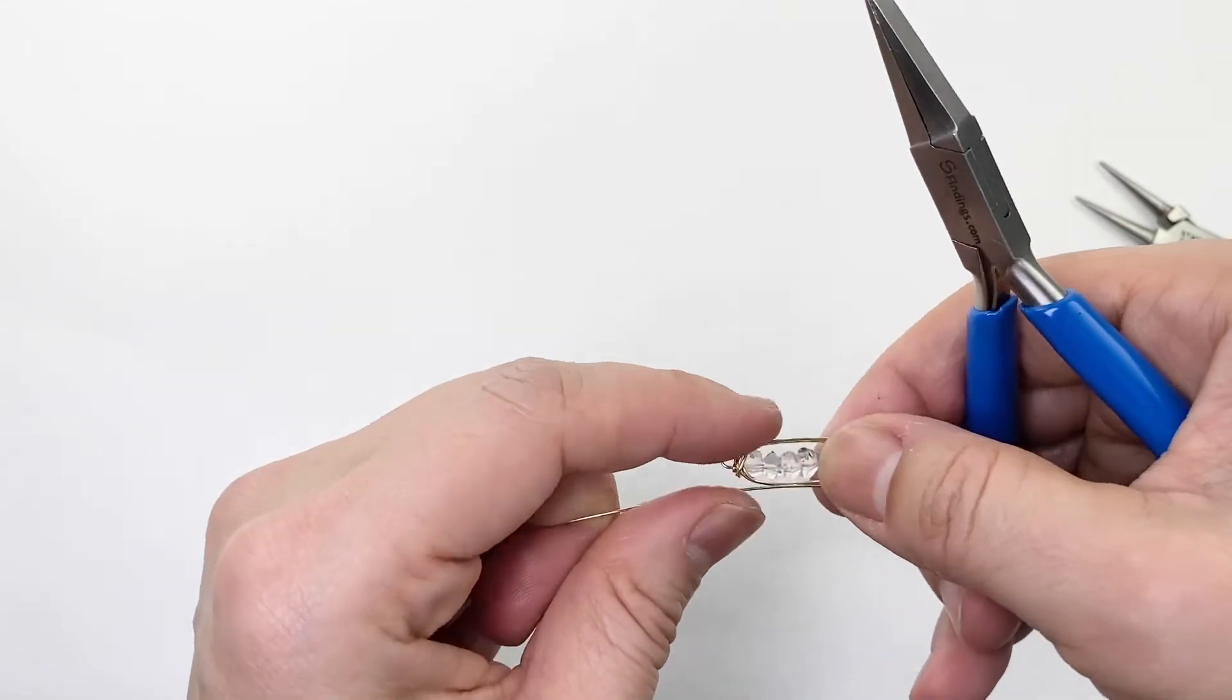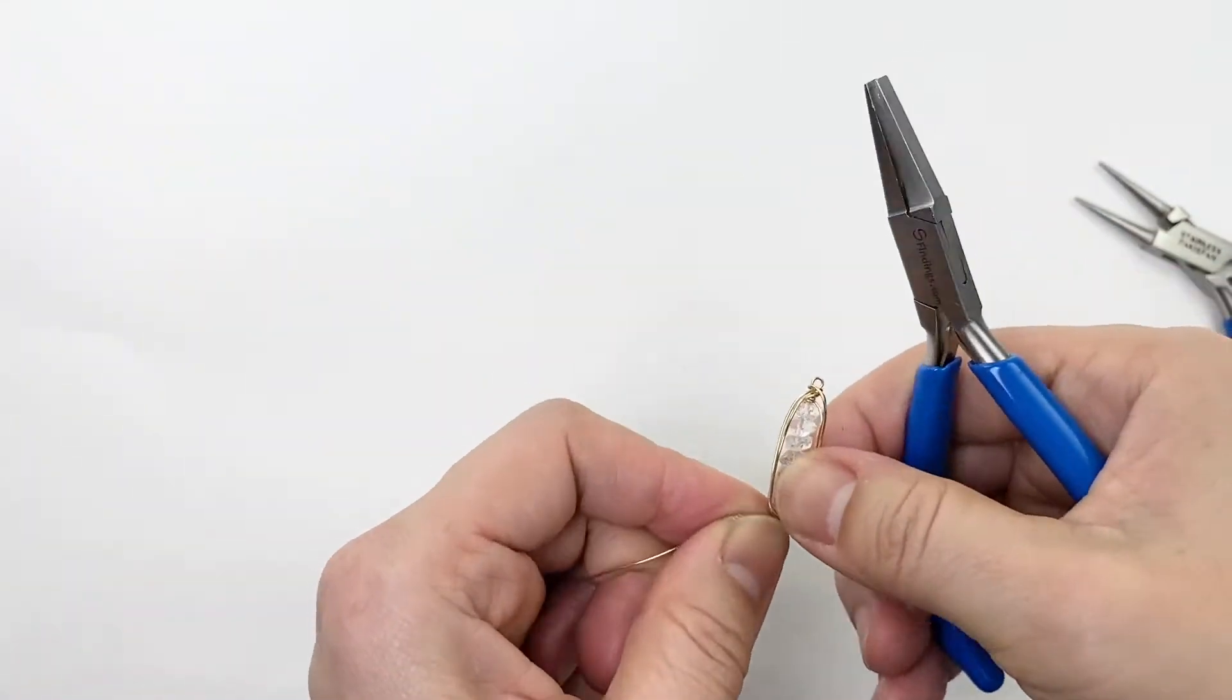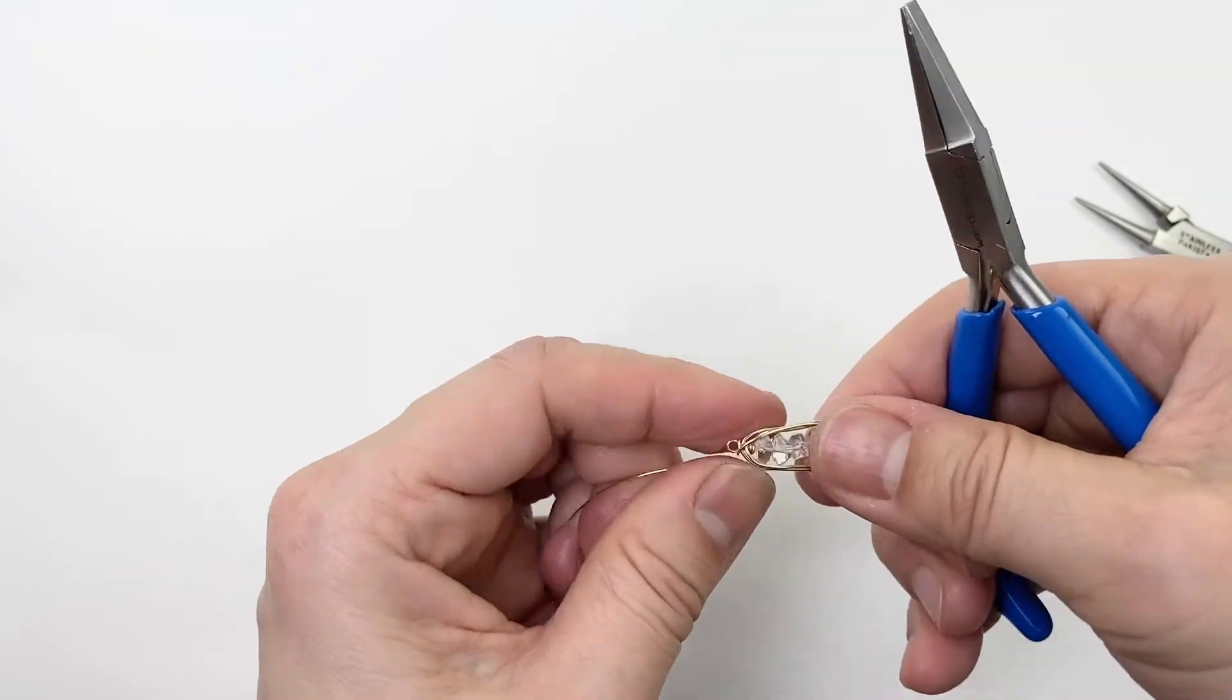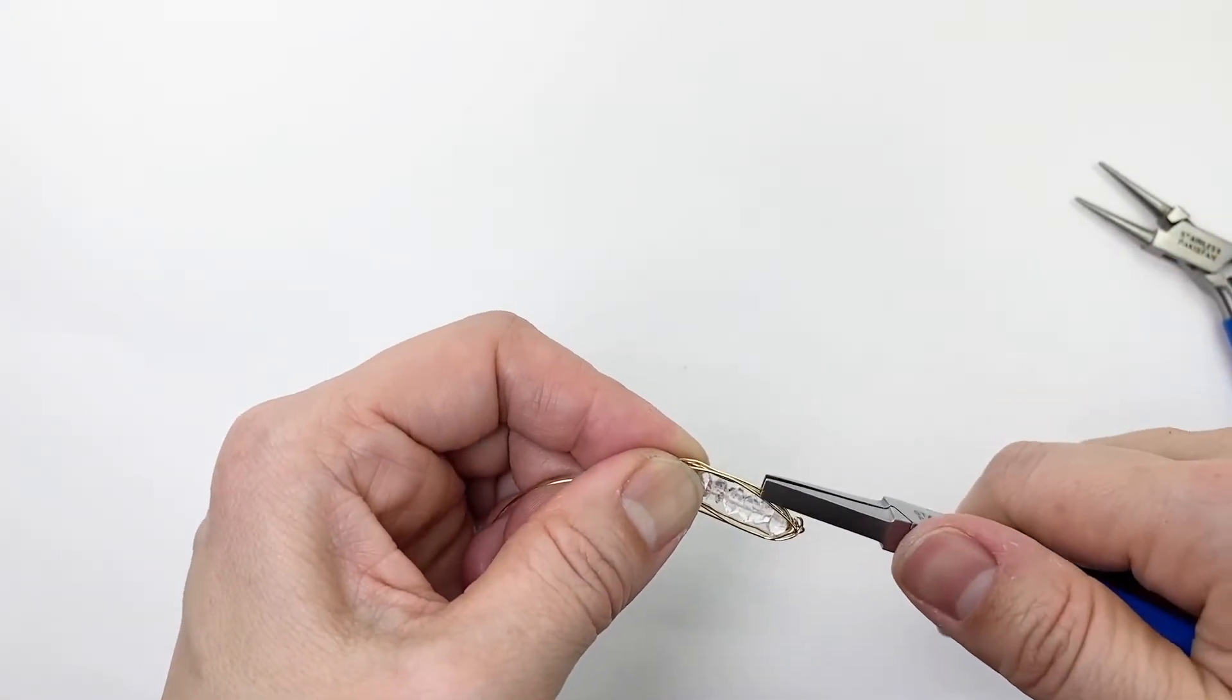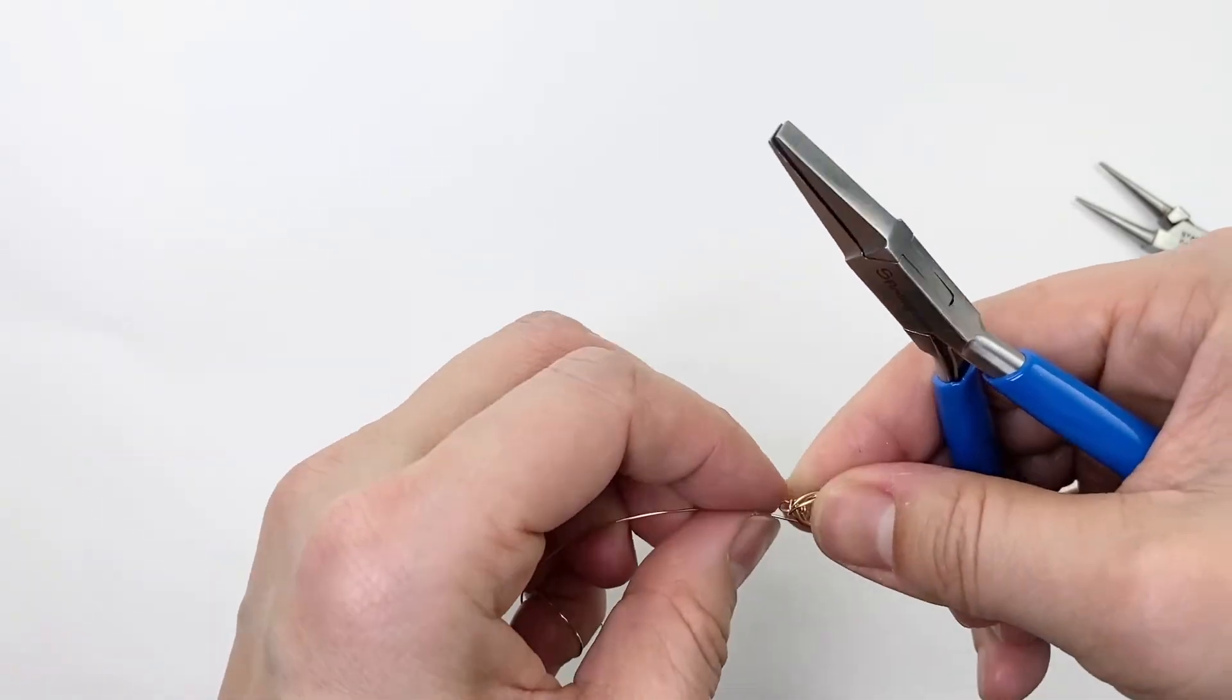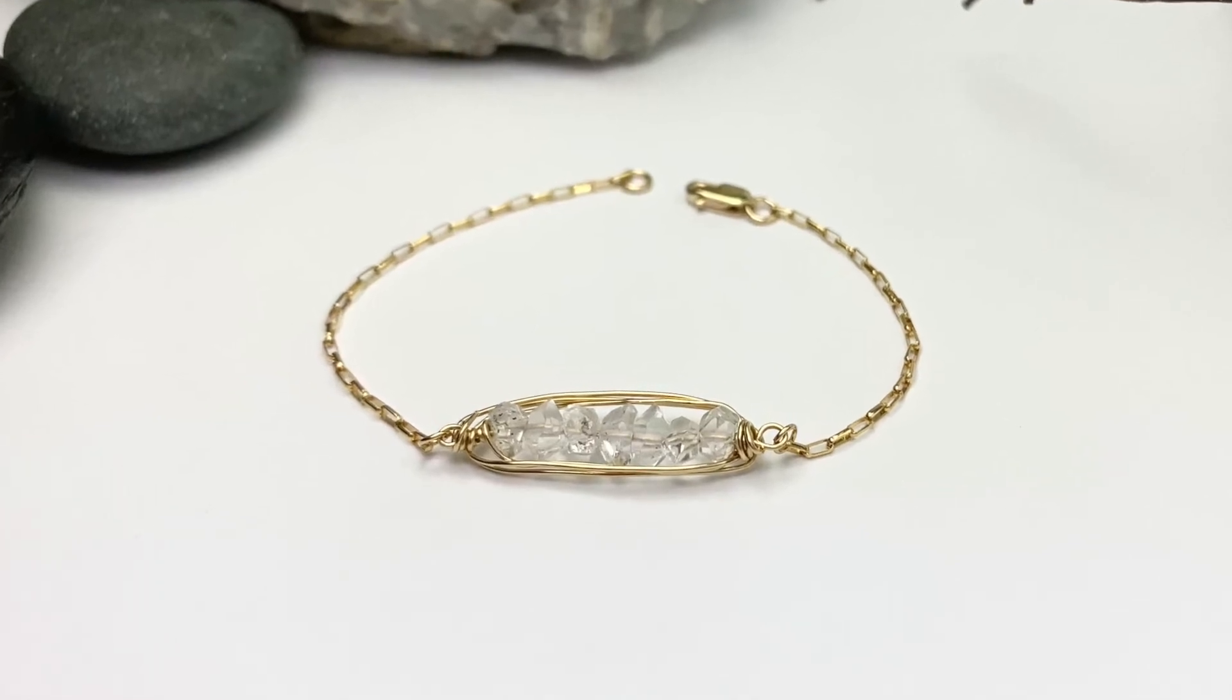Then at the very end, when I'm happy with it, I trim. But I straighten out along the way just to make sure I'm happy before going further. After I trim, I add it onto a chain and this is the finished product.